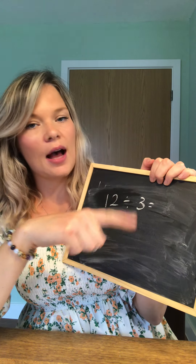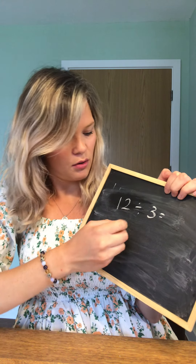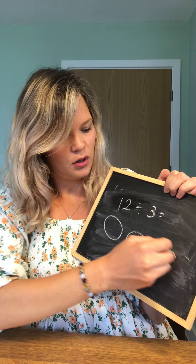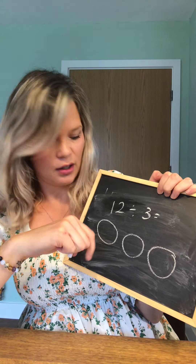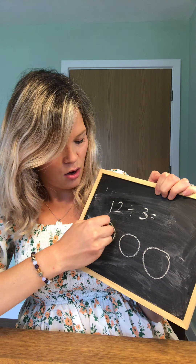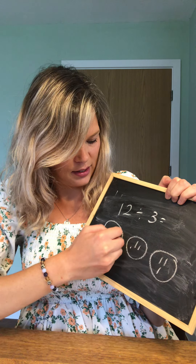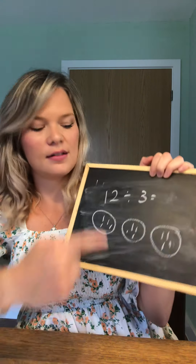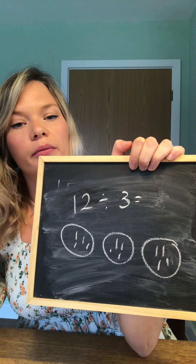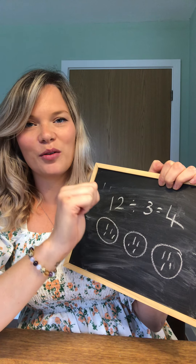Let me show you another one. Let's have a go at 12 divided by 3. So how many sharing circles do I need? I need 3 because I'm sharing between 3 groups. And I'm going to share out 12, counting 1 through 12 into the circles. There's the same amount in each circle. How many are in each circle? There are 4. So 12 divided by 3 equals 4.